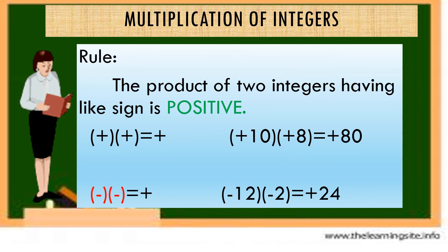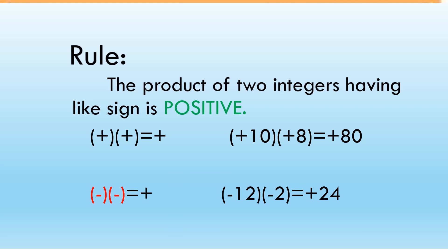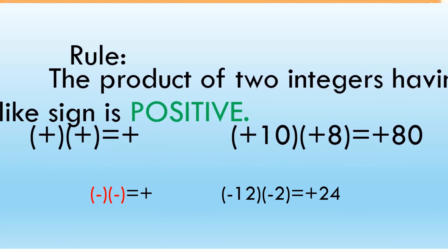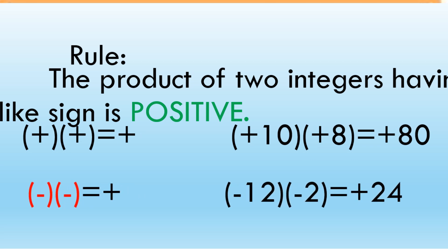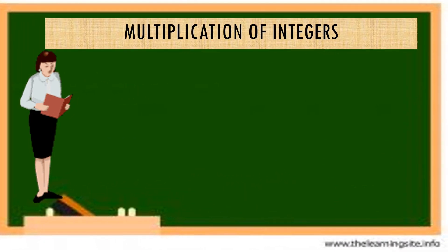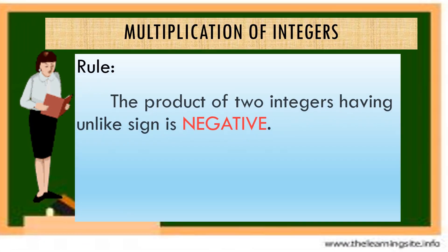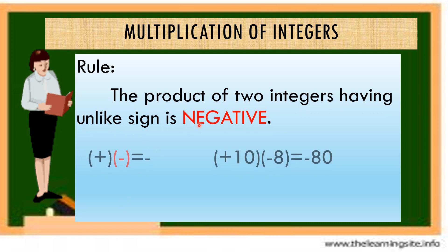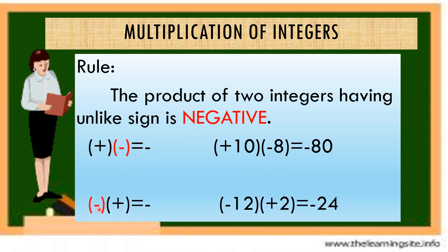The product of two integers having like signs is positive — positive times positive is positive, and negative times negative is positive. The product of two integers having unlike signs is negative — positive times negative is negative, and negative times positive is negative.